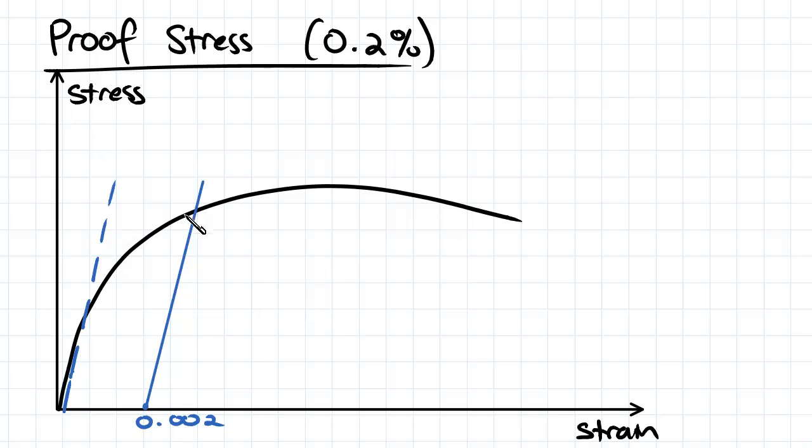And then this gradient here will be the Young's modulus, and then this point of intersection here will be the approximate yield stress.